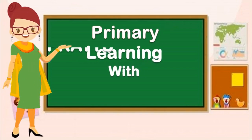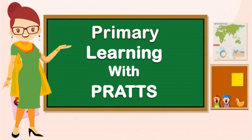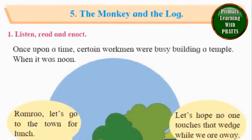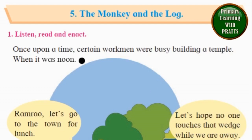Welcome to Primary Learning with Prats. Today we are doing Unit 7 Lesson 5: The Monkey and the Log. Today we will try and understand what this lesson is teaching us, or what we can learn from this lesson. So let's begin. It reads here: Once upon a time, certain workmen were busy building a temple.